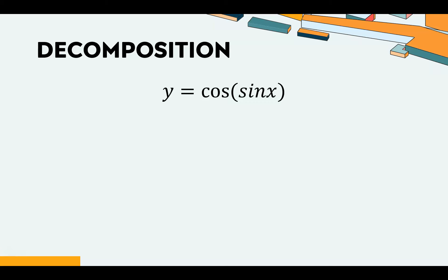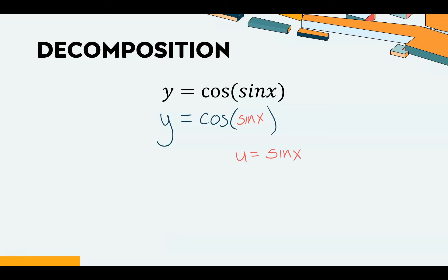To decompose cos(sin(x)): the outer function is cosine — we're taking cosine of something. That something is sin(x). So u = sin(x) and y = cos(u). We do this so we can take derivatives more easily.